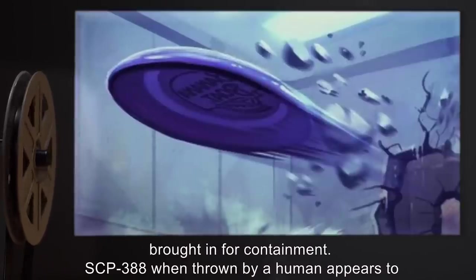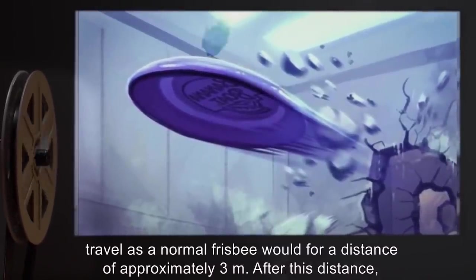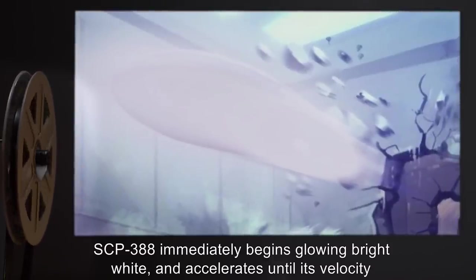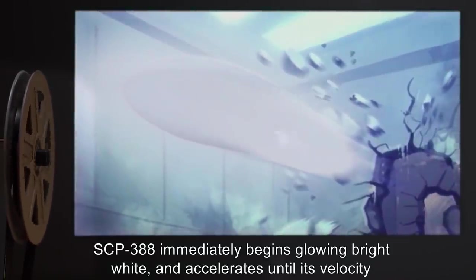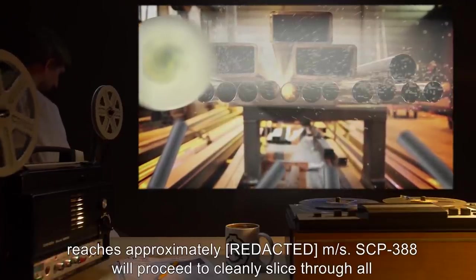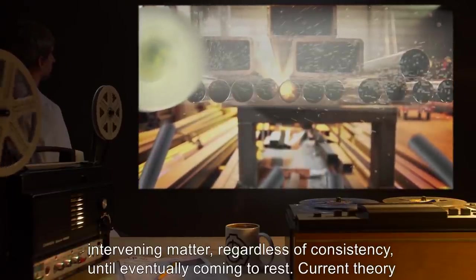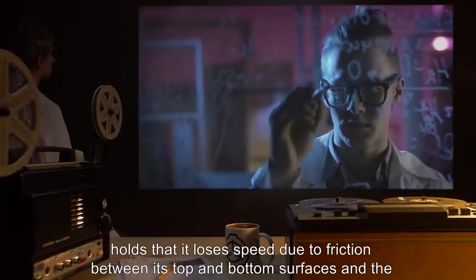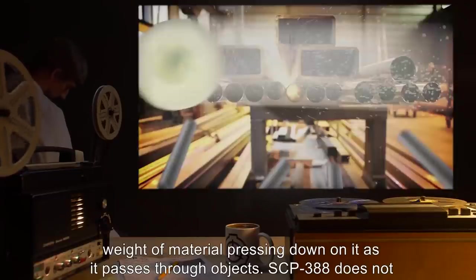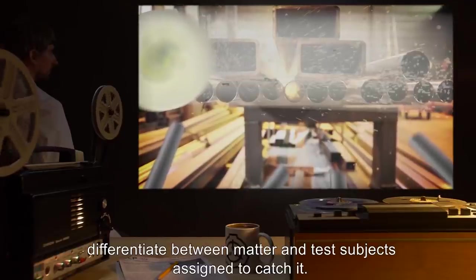SCP-388, when thrown by a human, appears to travel as a normal frisbee would for a distance of approximately three meters. After this distance, SCP-388 immediately begins glowing bright white and accelerates until its velocity reaches approximately [REDACTED] meters per second. SCP-388 will proceed to cleanly slice through all intervening matter regardless of consistency until eventually coming to rest. Current theory holds that it loses speed due to friction between its top and bottom surfaces and the weight of material pressing down on it as it passes through objects. SCP-388 does not differentiate between matter and test subjects assigned to catch it.